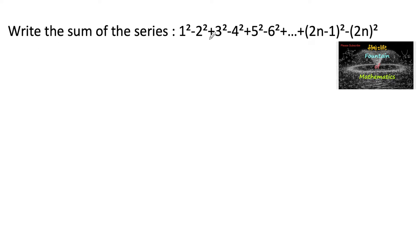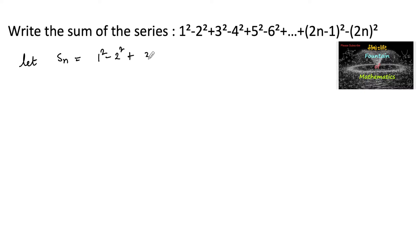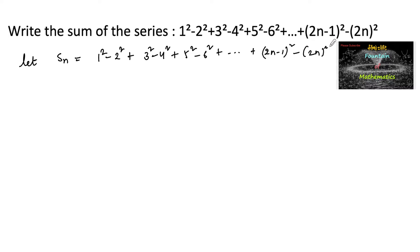Write the sum of the series 1² - 2² + 3² - 4² + 5² - 6² + ... + (2n-1)² - (2n)². Let us write the sum as Sn = 1² - 2² + 3² - 4² + 5² - 6² + ... + (2n-1)² - (2n)².